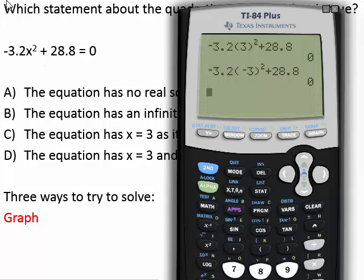So again we know that this side of the equation should be equal to 0. So what we're going to do is we're going to type this side of the equation in for y1.